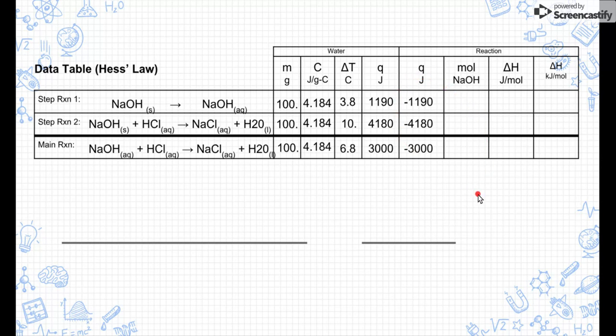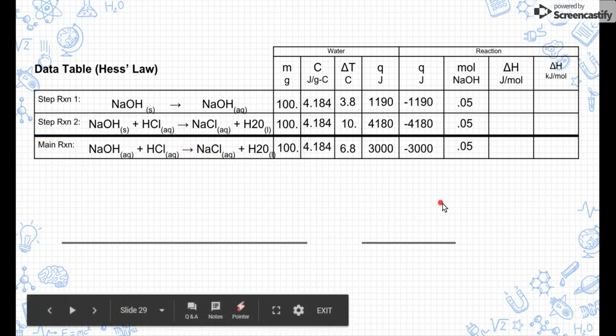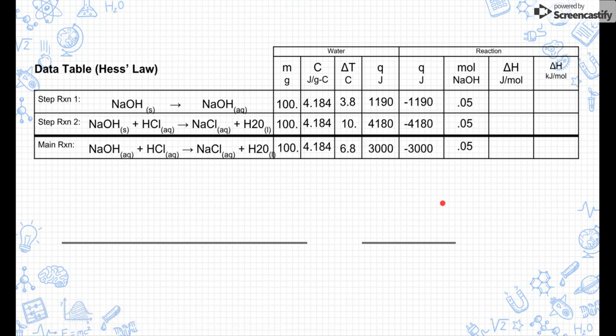Now we've got to think about how many moles of our reactant we used, and we're focusing on sodium hydroxide. So sodium hydroxide, for each of these, we used 0.05 moles. You might need to use some stoichiometry in this, and you might also need to use the molarity equation for the main reaction, because molarity is equal to moles per liter, but each of them is 0.05 moles.